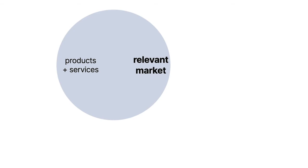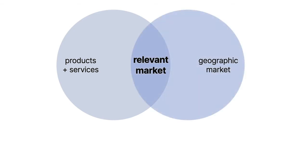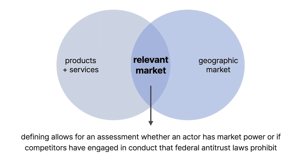One of the greatest challenges of antitrust practice is defining the relevant market to be scrutinized. The relevant market is the intersection of the products and services on one hand and the geographic market that's affected by anti-competitive conduct on the other. Defining the relevant market allows for an assessment of whether an actor has market power or if competitors have engaged in conduct that the federal antitrust laws prohibit. Although defining the market is usually done with respect to sellers, it also can apply to the conduct of buyers.